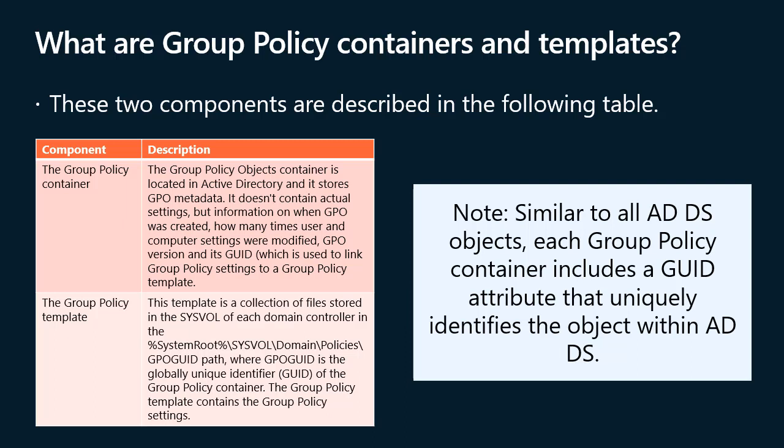The group policy container is located in Active Directory and stores GPO metadata. It doesn't contain actual settings, but information on when the GPO was created, how many times user and computer settings were modified, the GPO version, and its GUID, which is used to link group policy settings to a group policy template. The group policy template is a collection of files stored in the SysVol of each domain controller at the path %SystemRoot%\SysVol\domain\Policies\{GPO GUID}, where GPO GUID is the globally unique identifier of the group policy container. The group policy template contains the actual group policy settings. Similar to all ADDS objects, each group policy container includes a GUID attribute that uniquely identifies the object within ADDS.